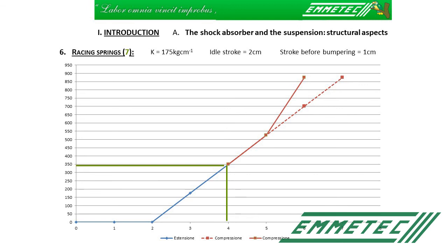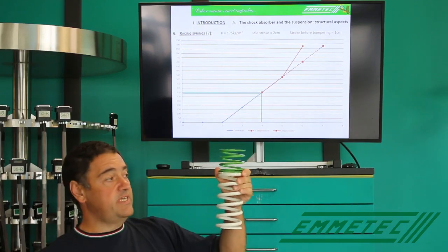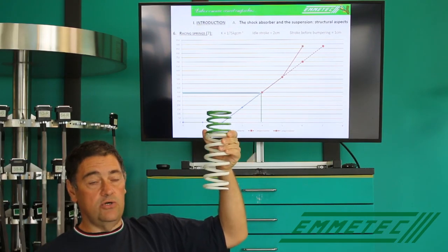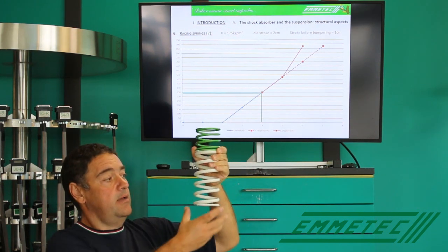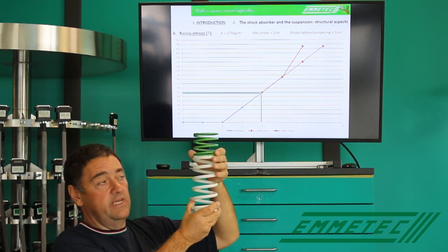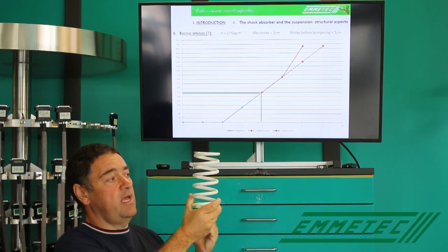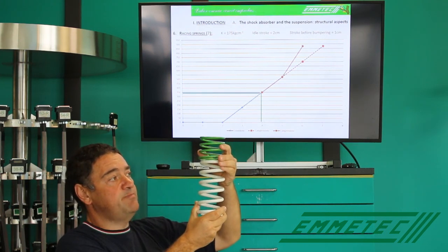Suppose that we have a circuit with many short and closed corners and we need to find a solution. At this point, we can choose the final solution, which is to set on the suspension two springs mounted in series — a main spring with a helper spring.